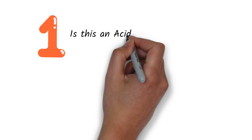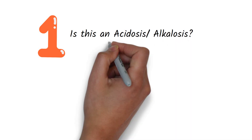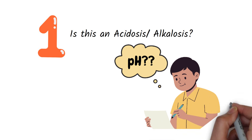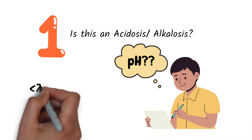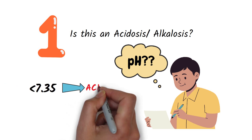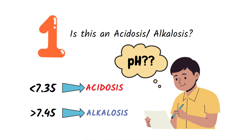Question number one: is this an acidosis or an alkalosis? To check if it's an acidosis or an alkalosis, check the pH. If the pH is less than 7.35, it's an acidosis. If the pH is more than 7.45, it's an alkalosis.